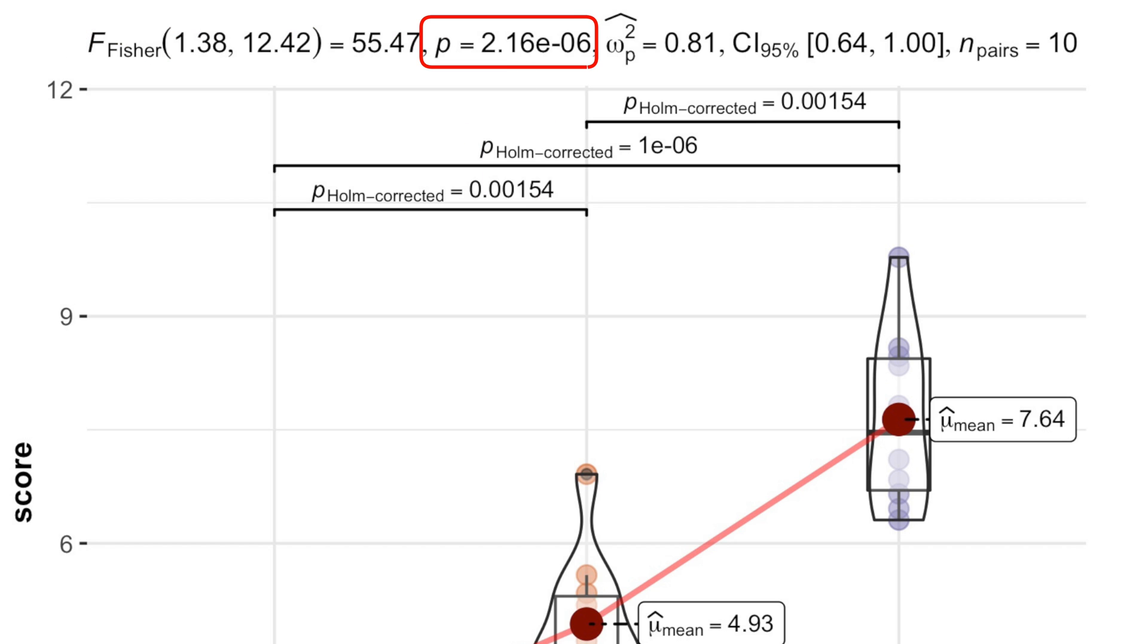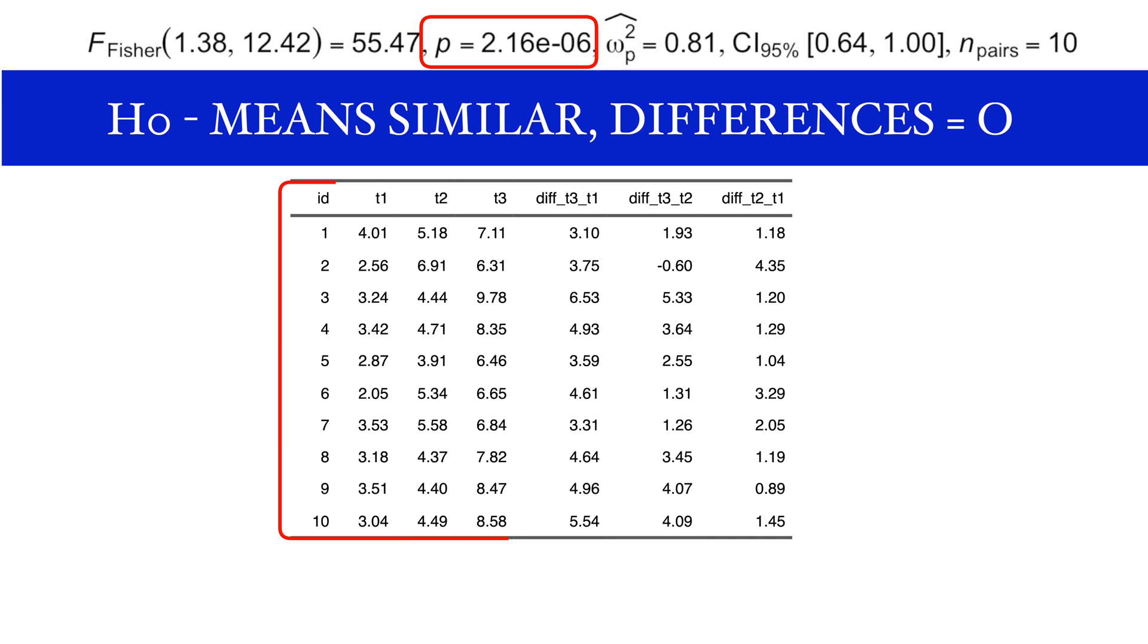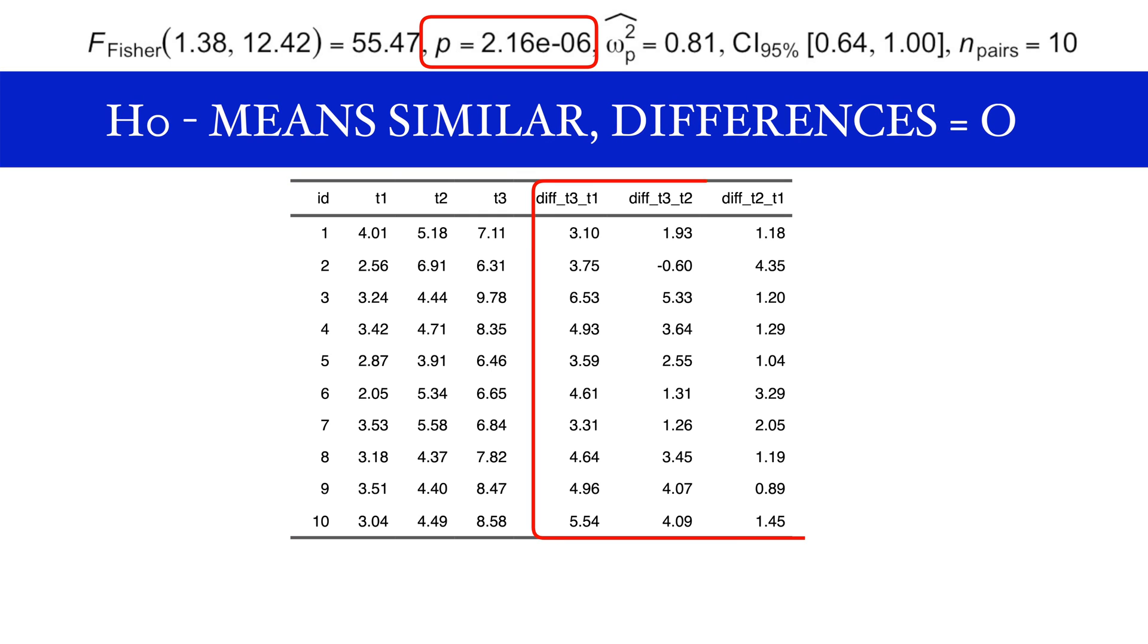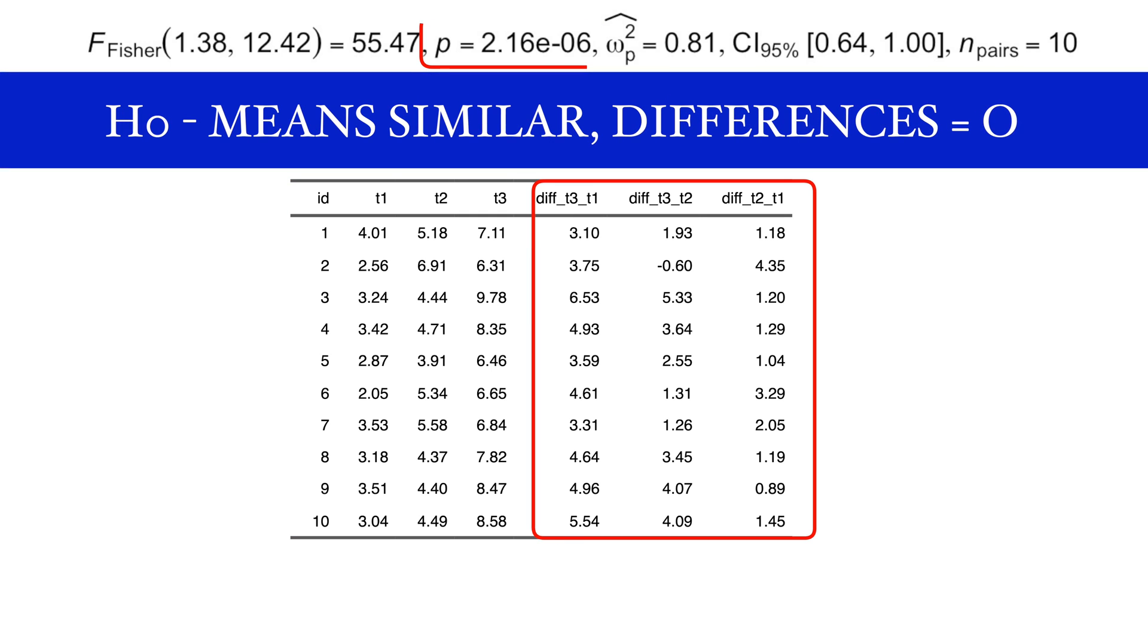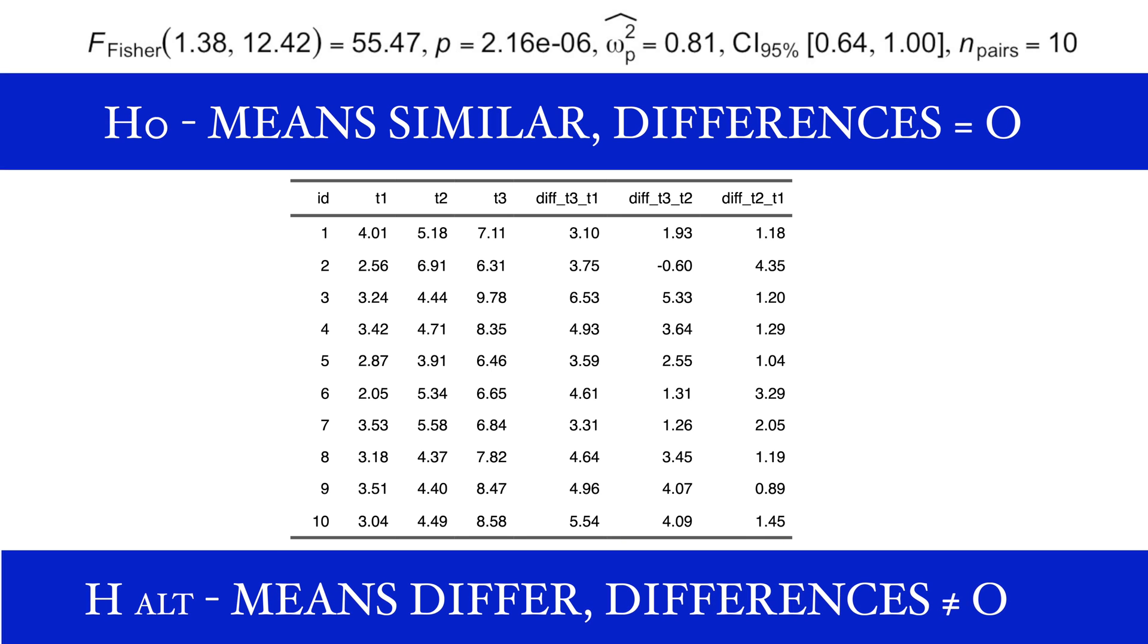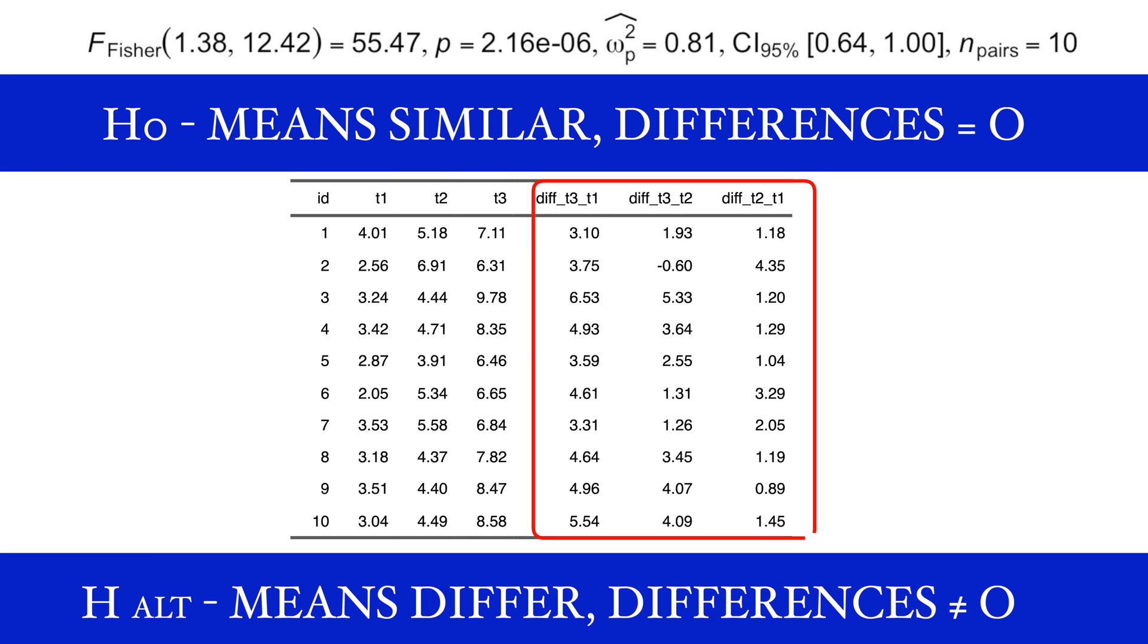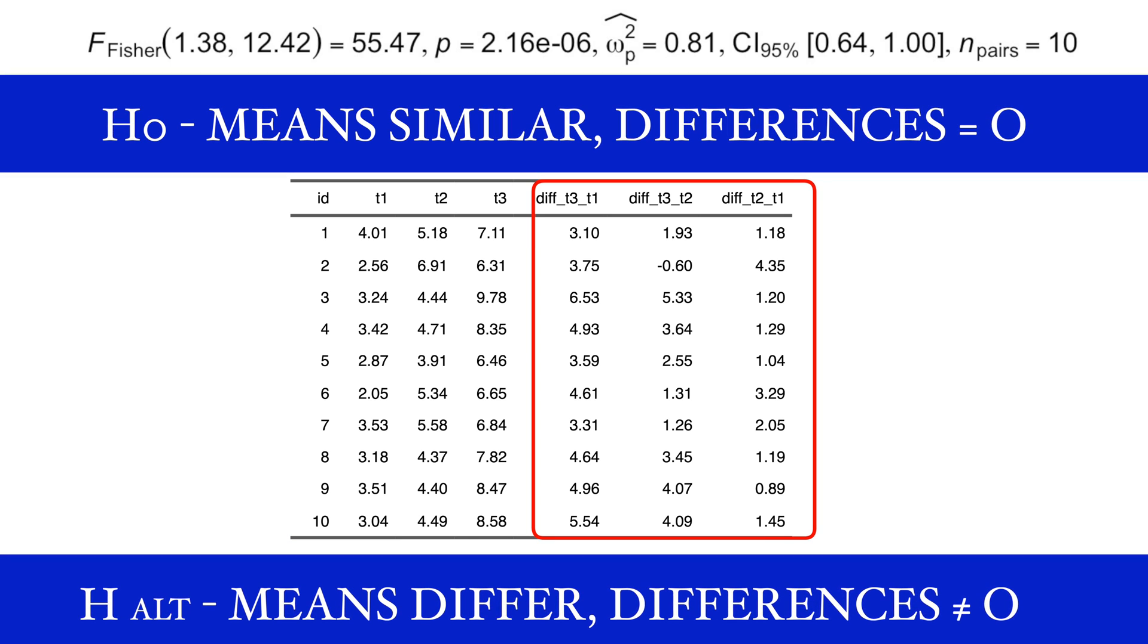The p-value helps to test the hypothesis, where null hypothesis says that sample means are similar, or, to be more exact, that the differences between pairwise samples are equal to zero. While the alternative hypothesis says that sample means differ, or, in other words, that differences between pairwise samples are not equal to zero.